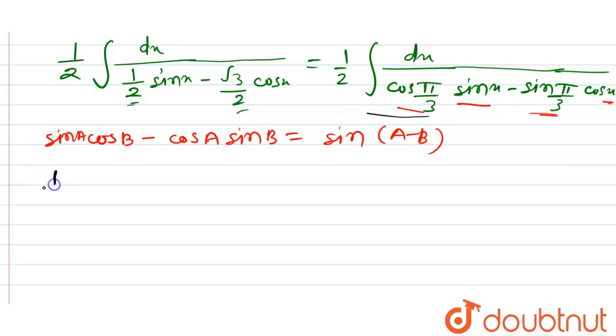Hence, this is equal to 1 by 2 into integral dx upon, this is sin a minus b, that is sin of x minus pi by 3.